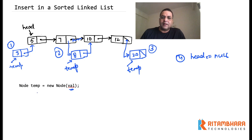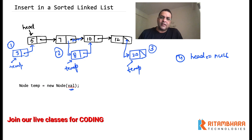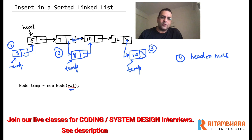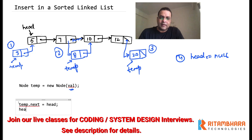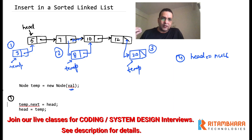In all the cases we will end up creating a new node. So when I say node temp = new node, a new node gets created and temp holds its address. In the first case where temp becomes the head, we will say temp.next = head and head = temp. I am assuming Java syntax with the dot pointer — if you are using C++ you can use the arrow pointer.